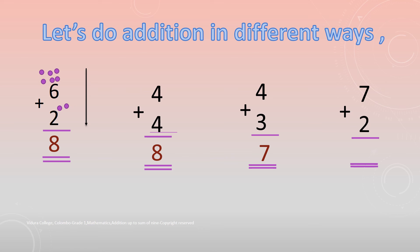Let's move to last one. 7 plus 2. 7 plus 2 is equal to 9.